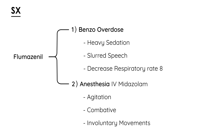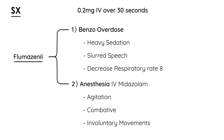That drug is flumazenil, and it's usually given as a dose of 0.2 milligrams IV over 30 seconds. Flumazenil is a benzodiazepine receptor antagonist that competes with benzodiazepines and can be used as an antidote to reverse benzodiazepine overdose, and also to help reverse unwanted side effects from anesthesia.